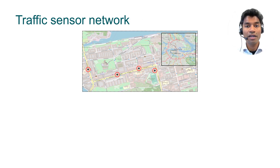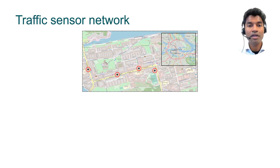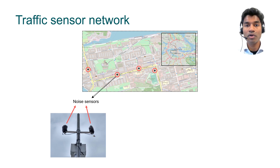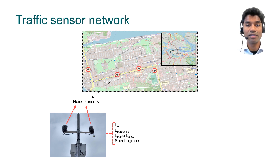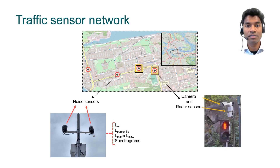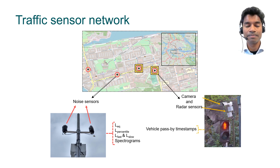Here is a description of the current state of the sensor network. On an innovation testbed along Hansgatan, there are four locations where there are noise sensors. Here is an example of what one of these locations looks like. These sensors provide metrics that allow for detecting and classifying vehicles, as well as evaluating the noise levels at these locations. In two of these locations, we also have camera and radar sensors from Ediva, which give information about the times at which a vehicle passes that stretch of the road.